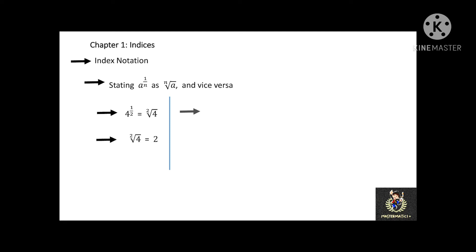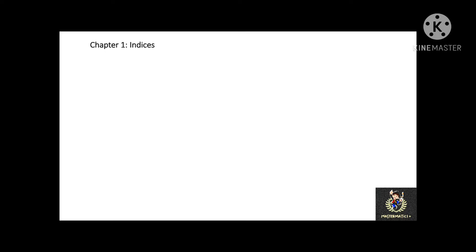The next example: 8 to the power of 1 over 3 is equal to the cube root of 8, where the cube root of 8 is equal to 2, because 2 times 2 times 2 is equal to 8. And the last example: 16 to the power of 1 over 4 is equal to 2, because 2 times 2 times 2 times 2 is equal to 16.